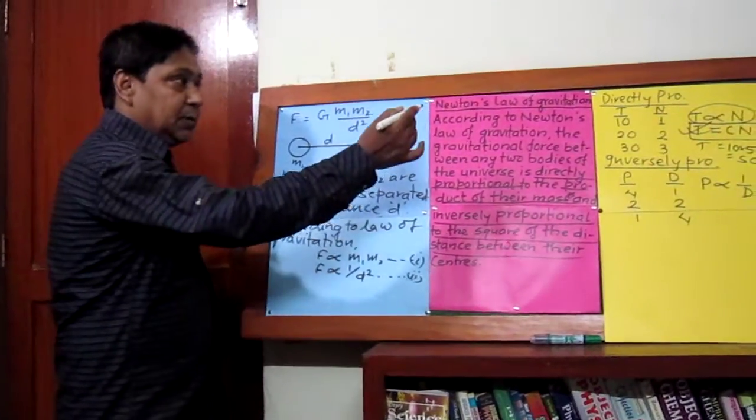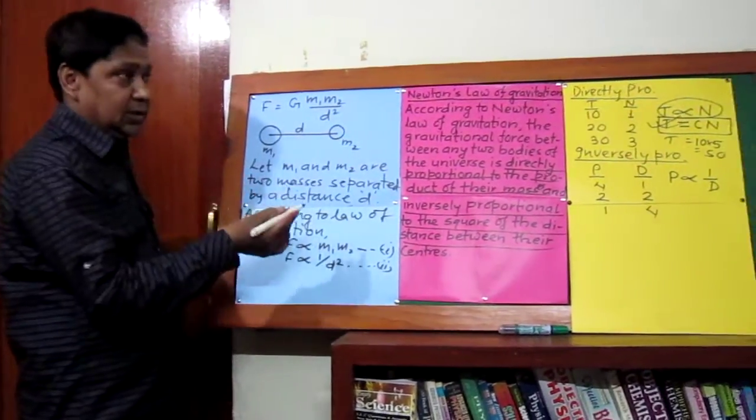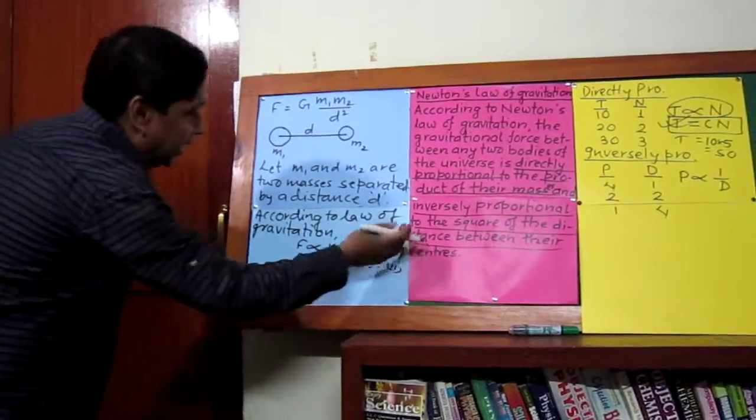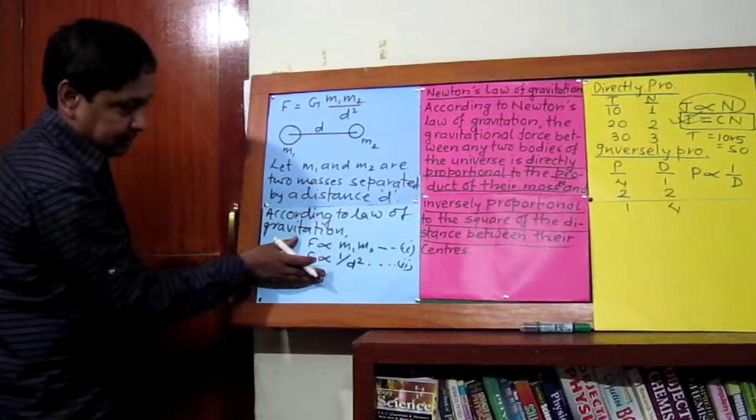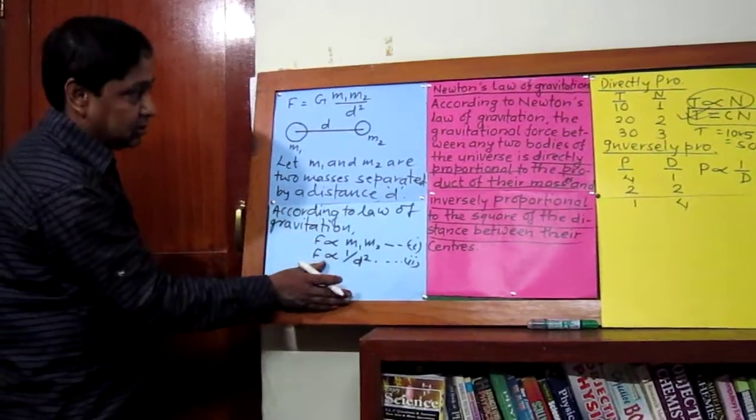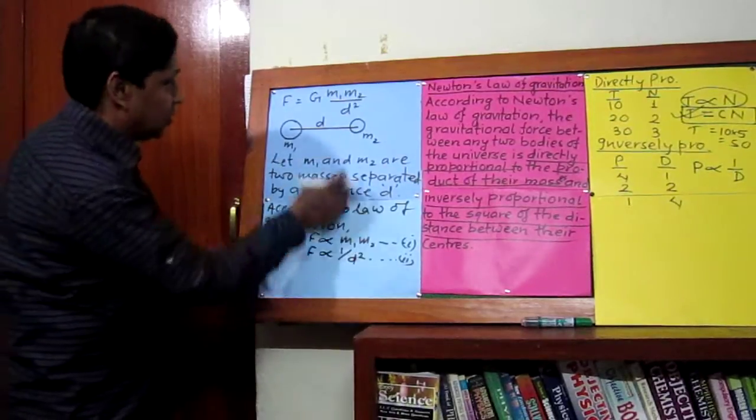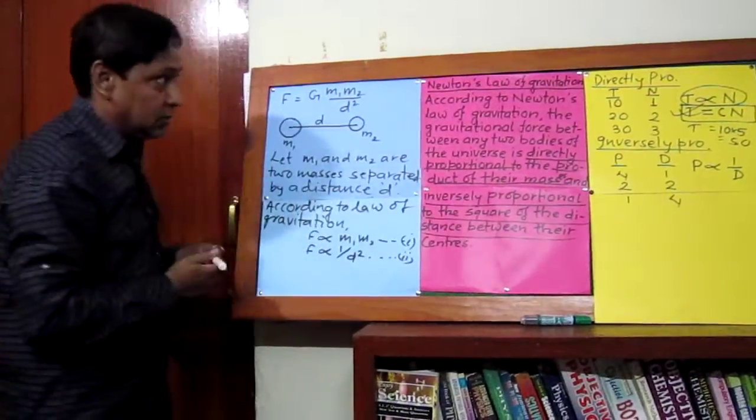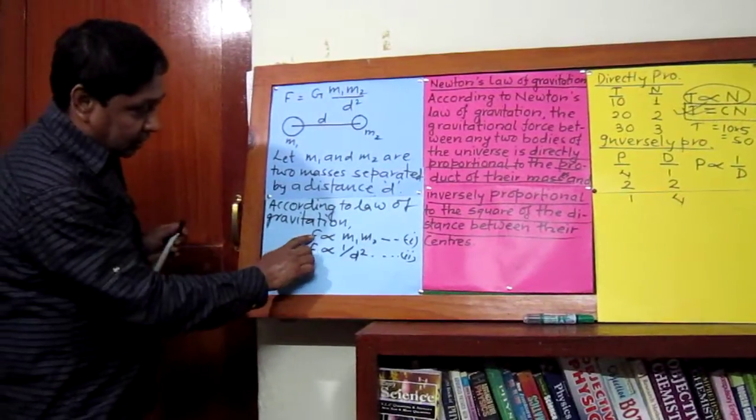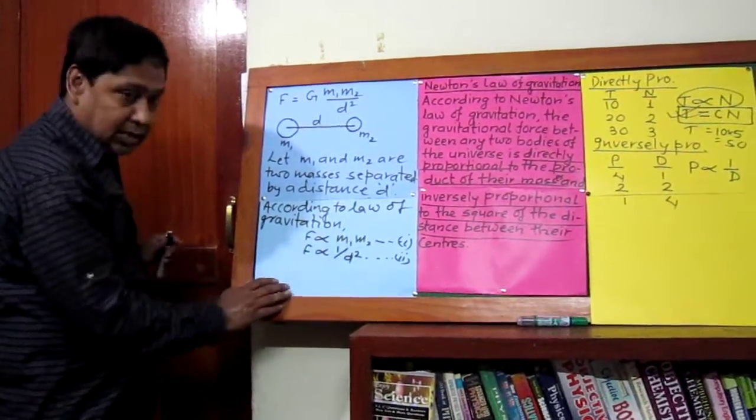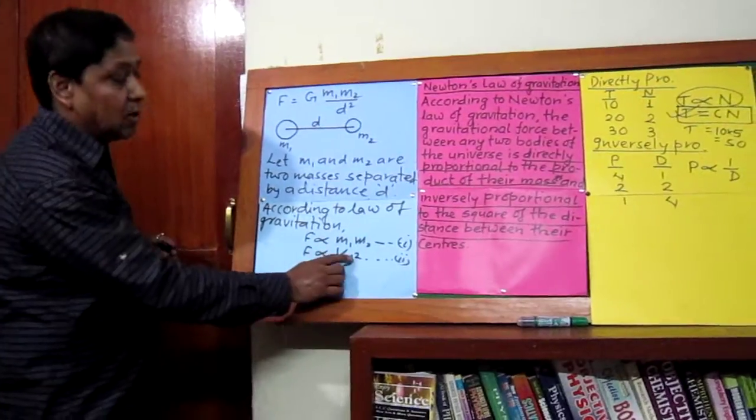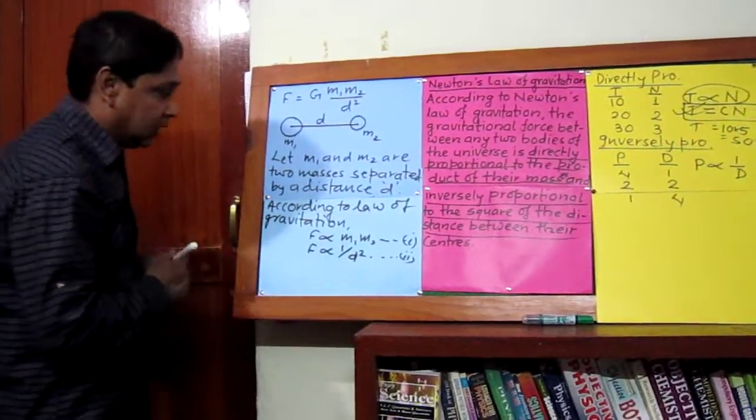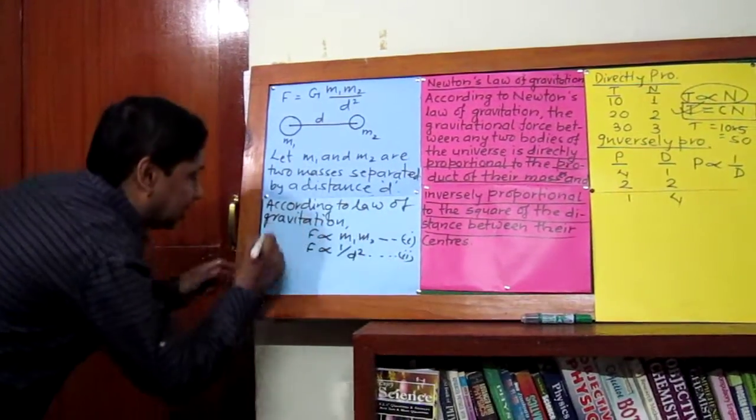After understanding directly proportional and inversely proportional relationships, we can come back to what I wrote while getting this equation of Newton's law of gravitation. F is directly proportional to m1 and m2, but F is inversely proportional to d square. Now these two equations can become combined.